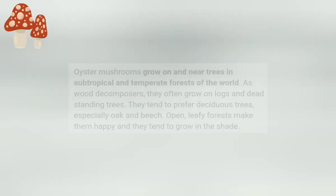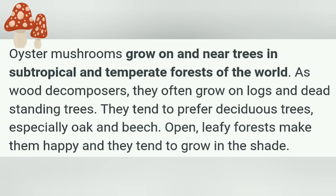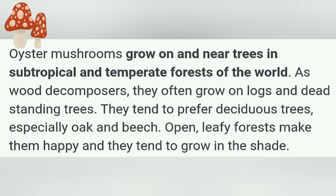Oyster mushrooms grow on and near trees in subtropical and temperate forests of the world. This oyster mushroom is cosmopolitan — found growing everywhere around the globe. As wood decomposers, they often grow on logs and dead standing trees. They tend to prefer deciduous trees, especially oak and beech. Open leafy forests make them happy, and they tend to grow in the shade.